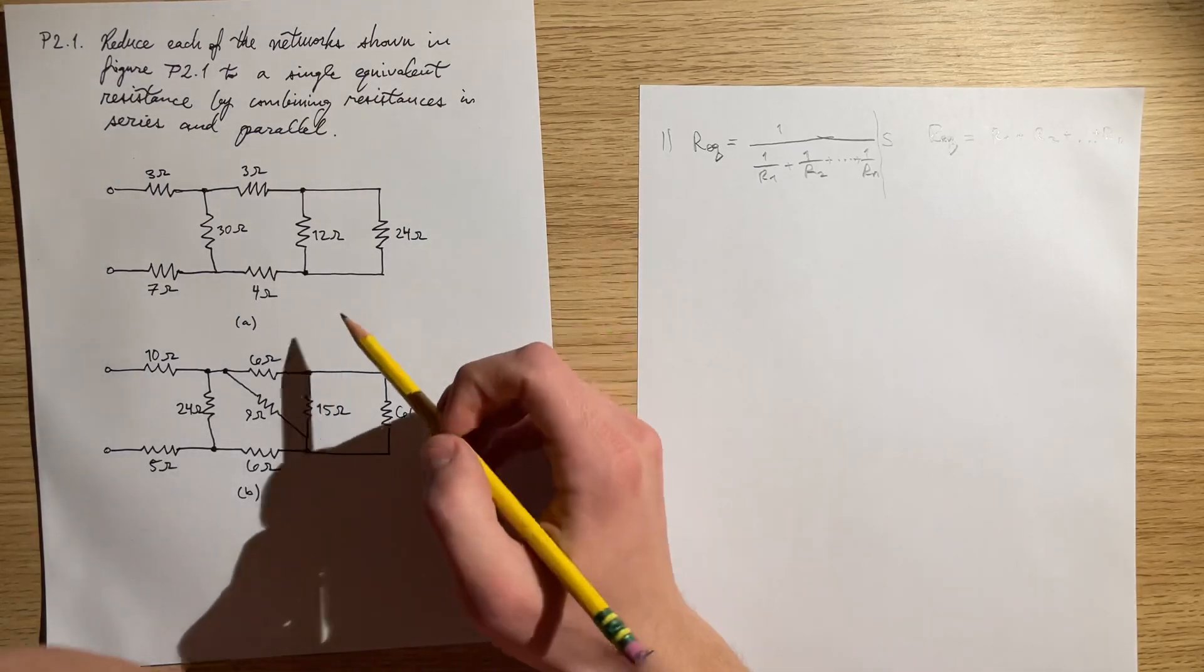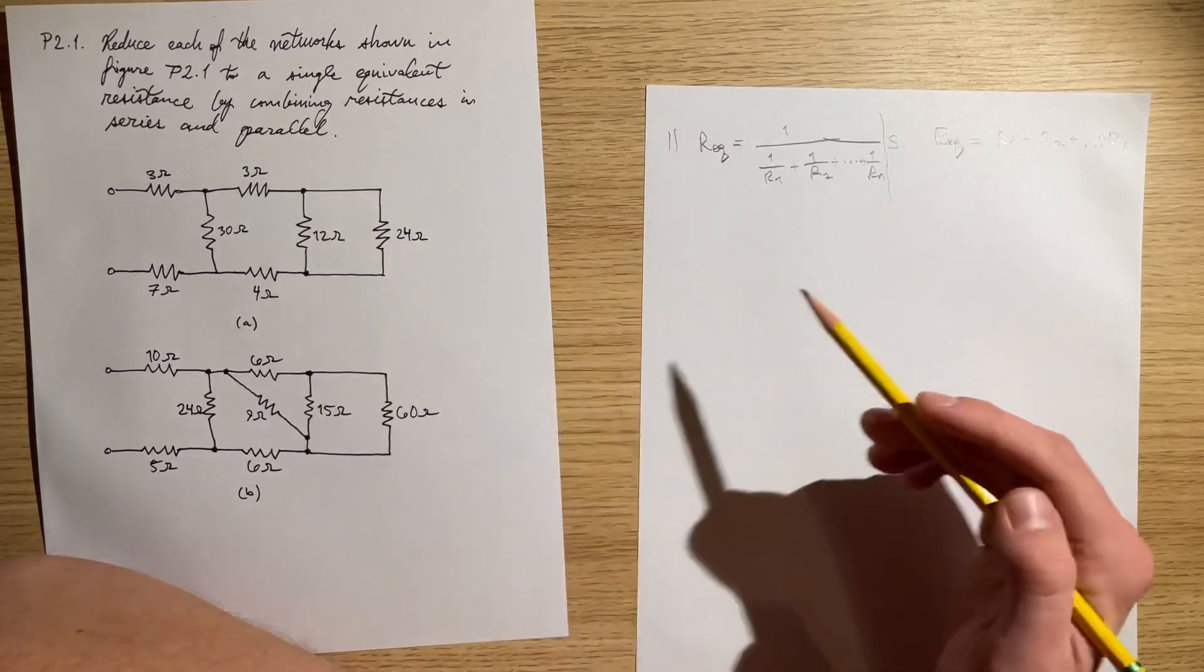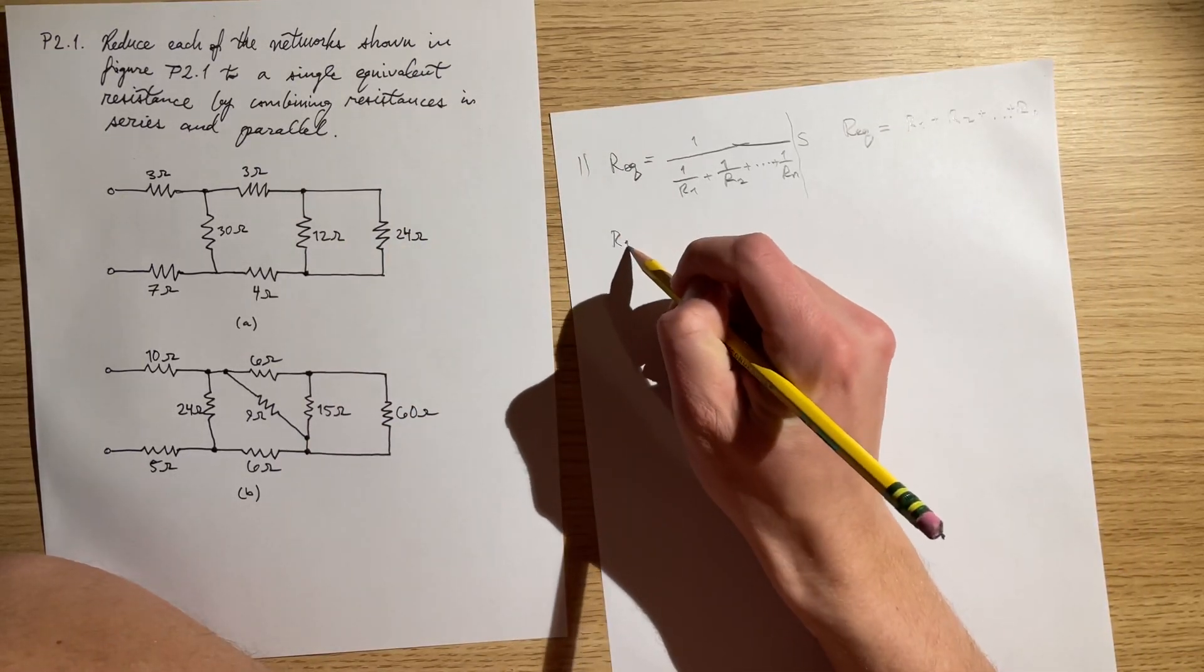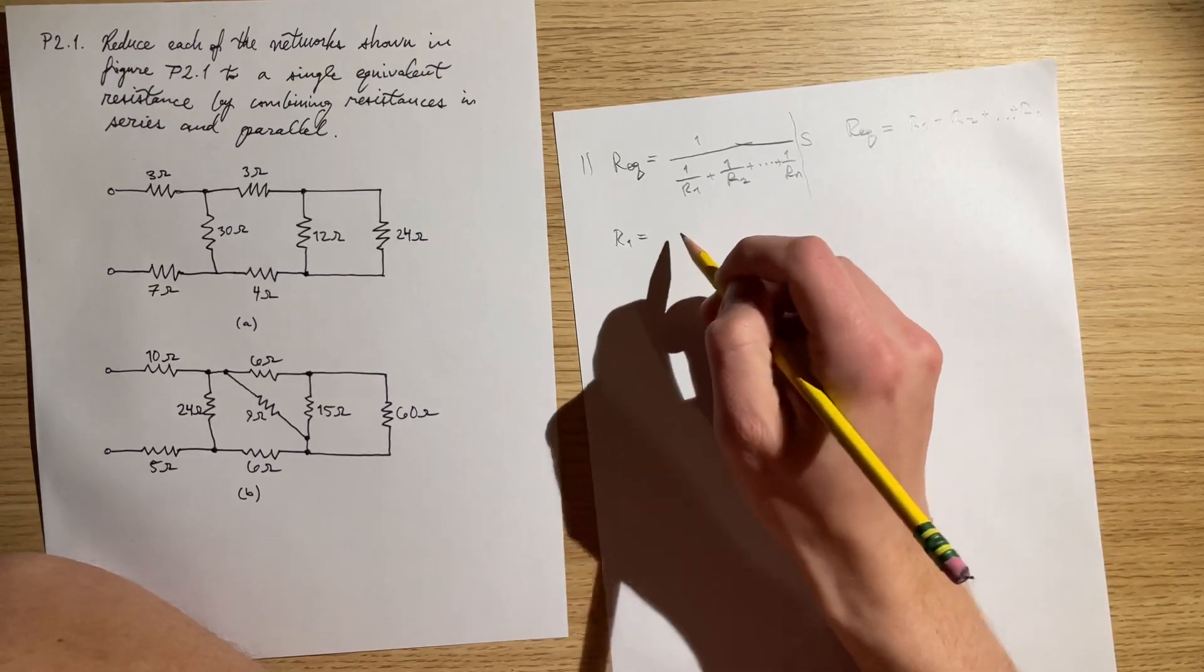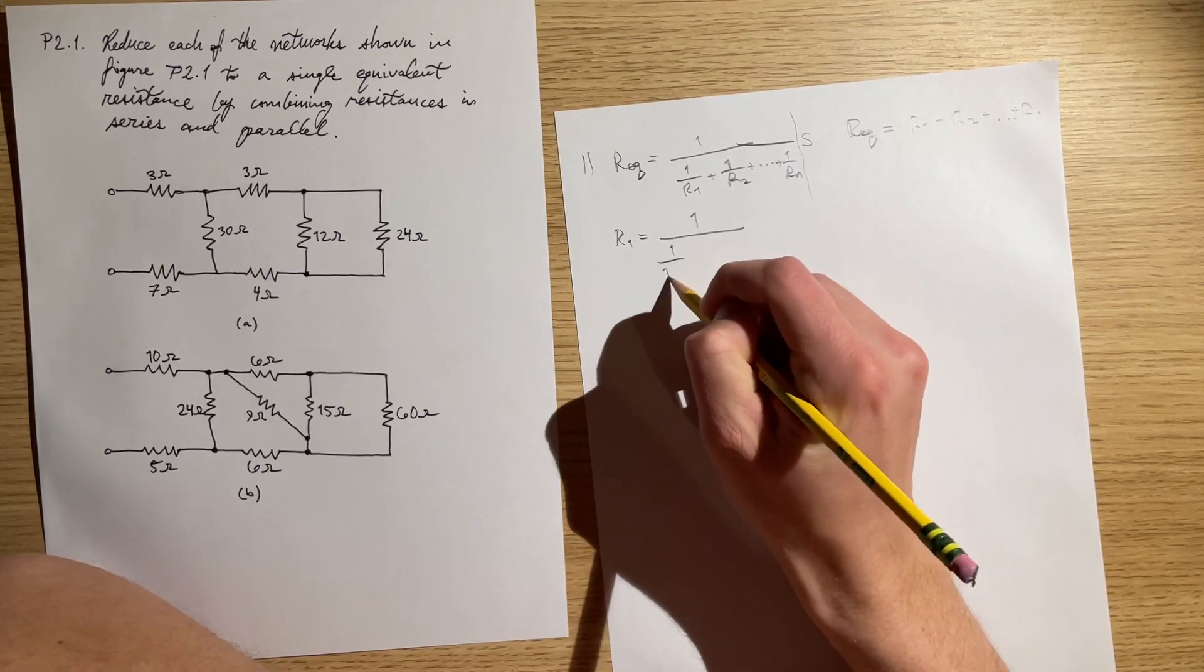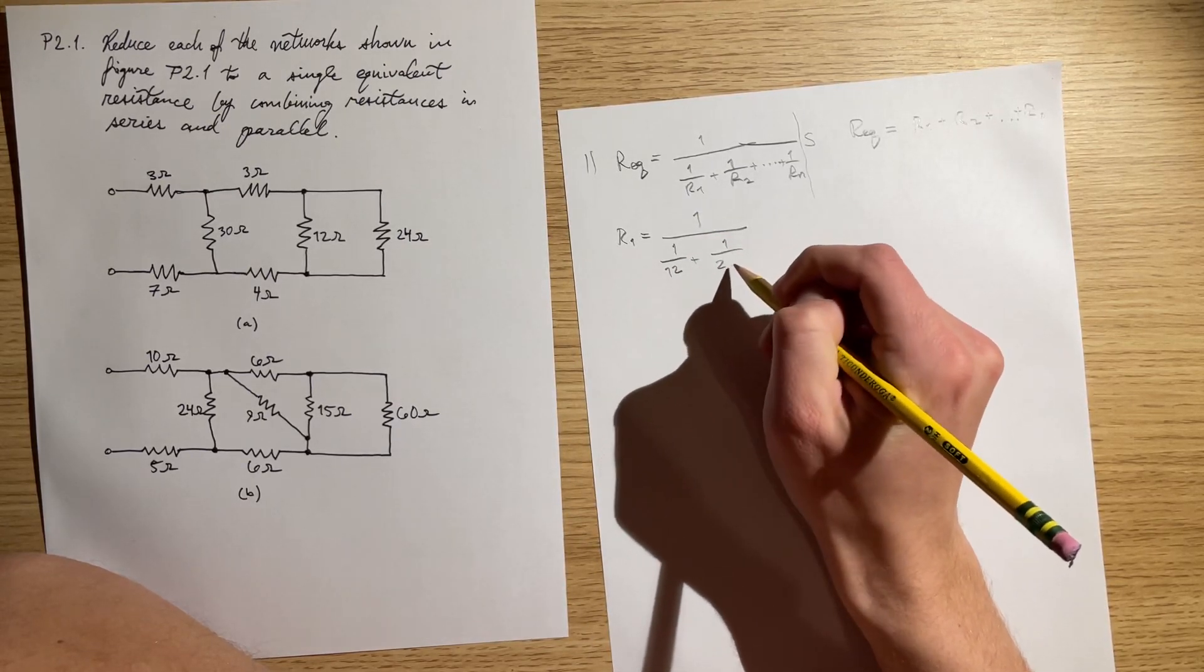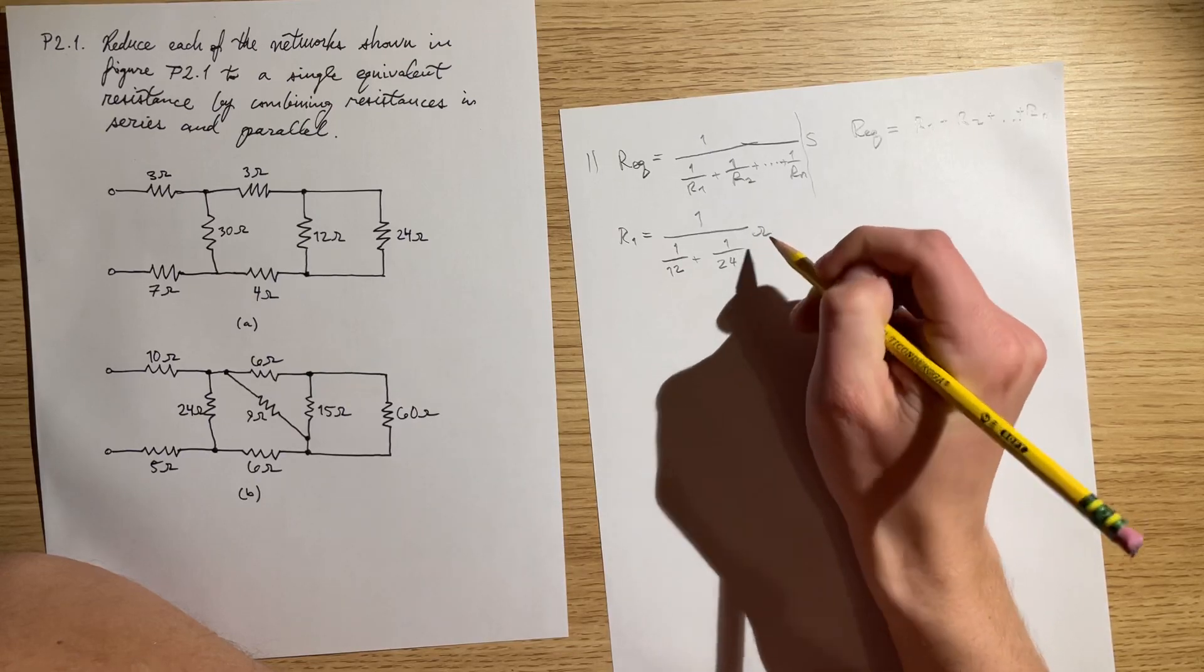As we can see right here, we can immediately simplify these two. These are in parallel, not series, so we'll just do R1 to keep track of that. It's going to be 1 over these two fractions right here,